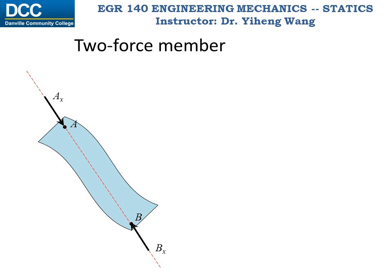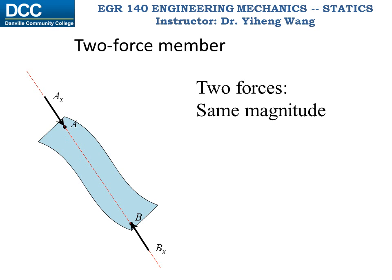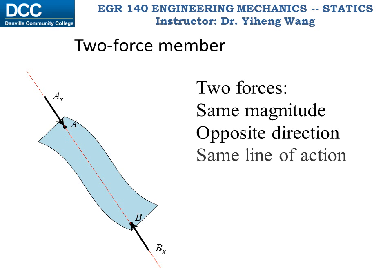So if a member only has forces acting on two points, it is called a two-force member. The two forces will have the same magnitude, opposite direction, and the same line of action, which is simply the line connecting the two points.